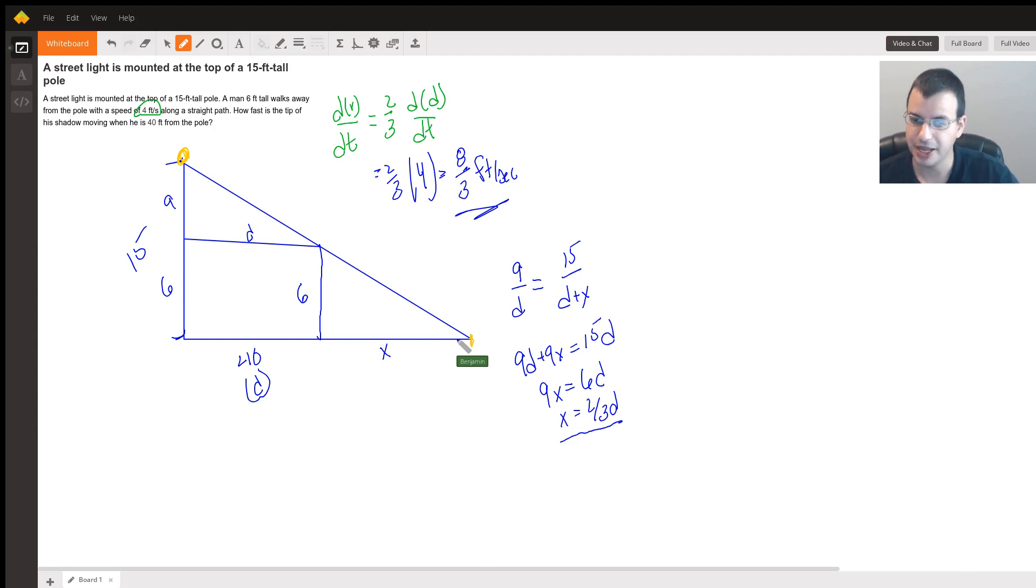So to get the total, we have to look at the derivative with respect to time of d plus x. And since we're just adding these together, this will be the derivative of d with respect to time plus the derivative of x with respect to time.